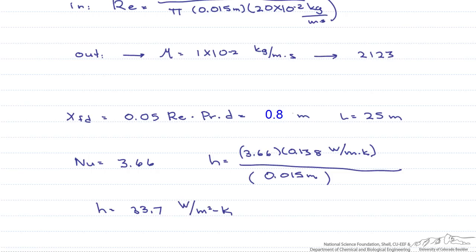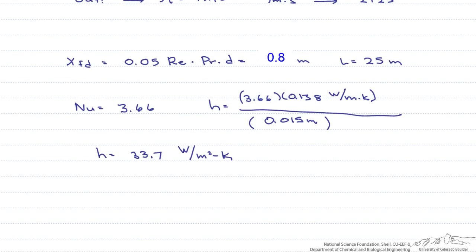We can use this heat transfer coefficient in any number of equations. In particular, if we want to find the temperature of the fluid coming out, we would need to use this heat transfer coefficient. How would we find that? Well, we would use the fact that our Q can be written as M C sub P delta T, Tm out minus Tm in, that's also going to equal H, which we just found, times A times our delta T log mean.